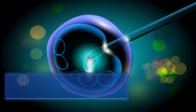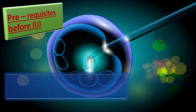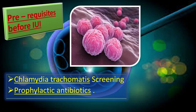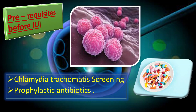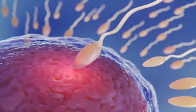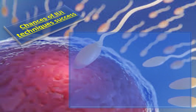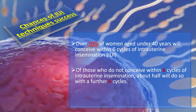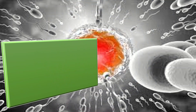Prerequisites before IUI: NICE recommends screening for Chlamydia trachomatis before IUI, and if screening is not done, prophylactic antibiotics should be offered. Regarding IUI success: NICE guidelines state that over 50% of women aged under 40 will conceive within 6 cycles of IUI. Of those who do not conceive within 6 cycles, about half will do so with a further 6 cycles, giving a cumulative pregnancy rate of about 75%.